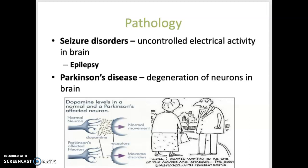Parkinson's disease is a progressive neurological disorder that causes degeneration of neurons in the brain. Symptoms include slow movement, shaking tremors, a shuffling gait where there is difficulty picking up the feet, and a mask-like facial expression.